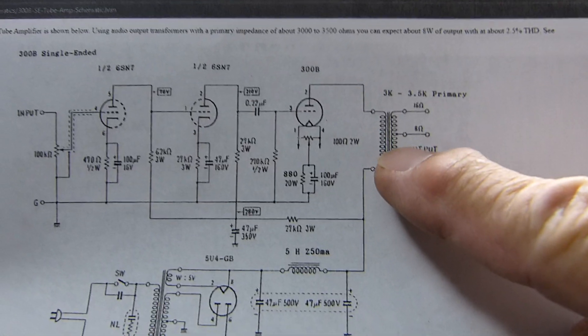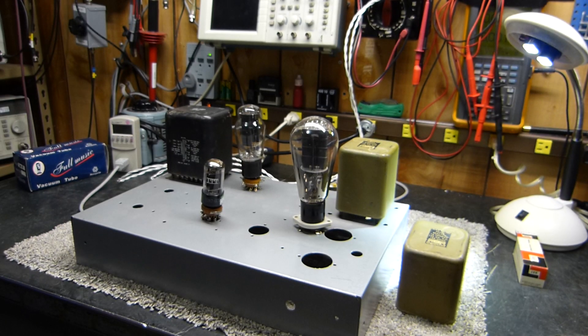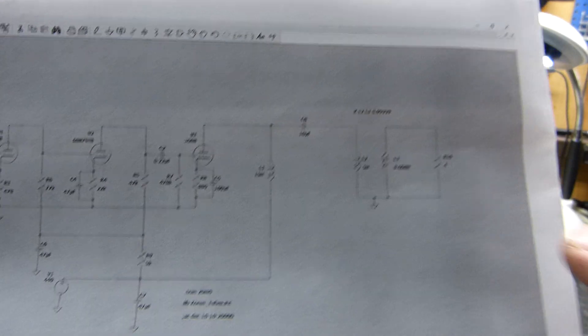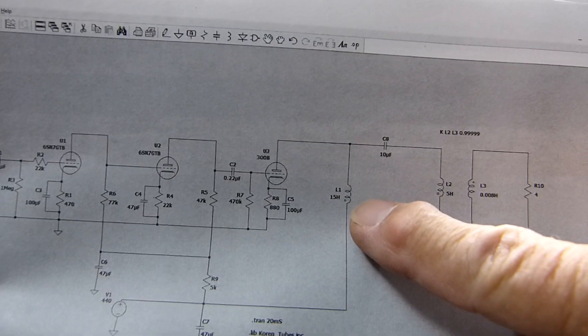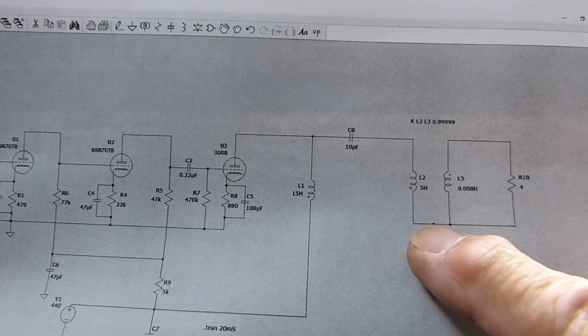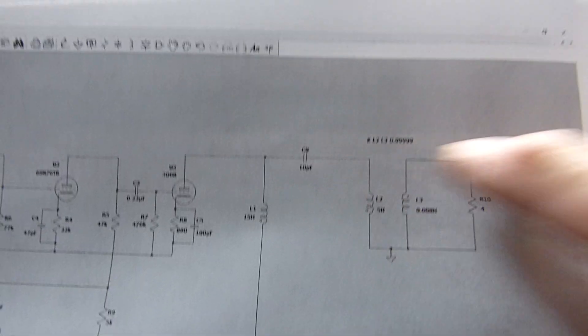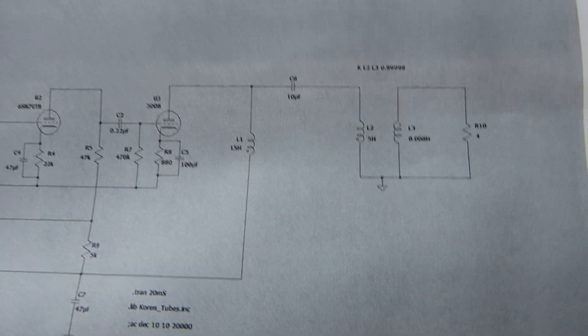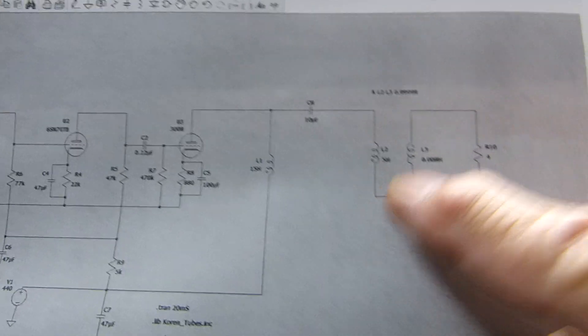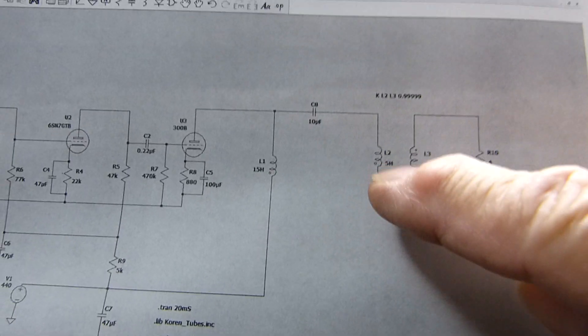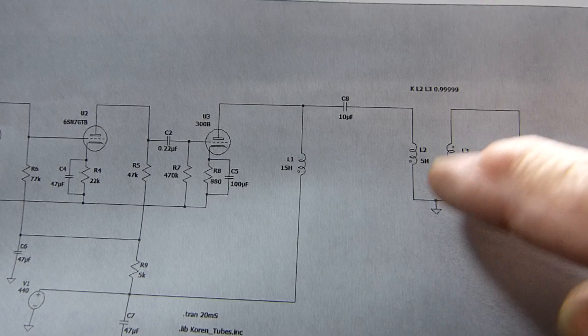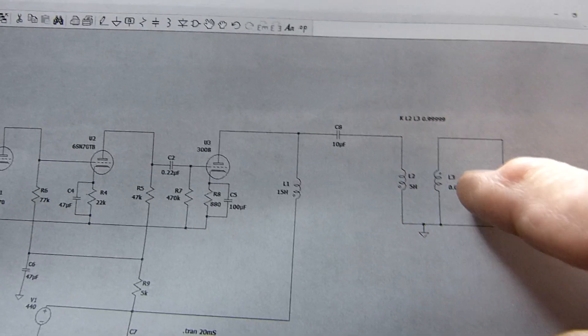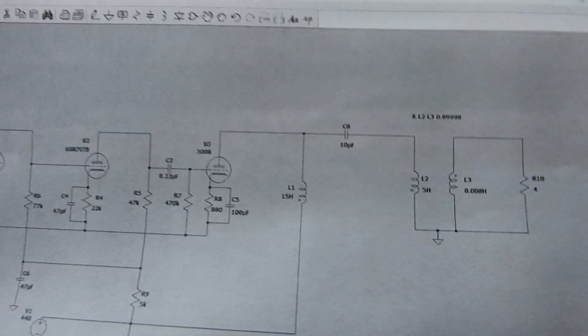This is the difference I got to show you: they use an output transformer, but we're not going to use an output transformer. We're going to use a choke. There's a 15 Henry choke right there, capacitively coupled to a line transformer. Those little small matching transformers that can't have any DC flowing through it - we're not going to have any DC, so we're not saturating the core. I modeled this as 5 Henrys to 8 millihenrys, which is an impedance ratio of 625 to 1, or a turns ratio of 25 to 1. That's 5k to 8 ohms through a 10 microfarad to this choke.